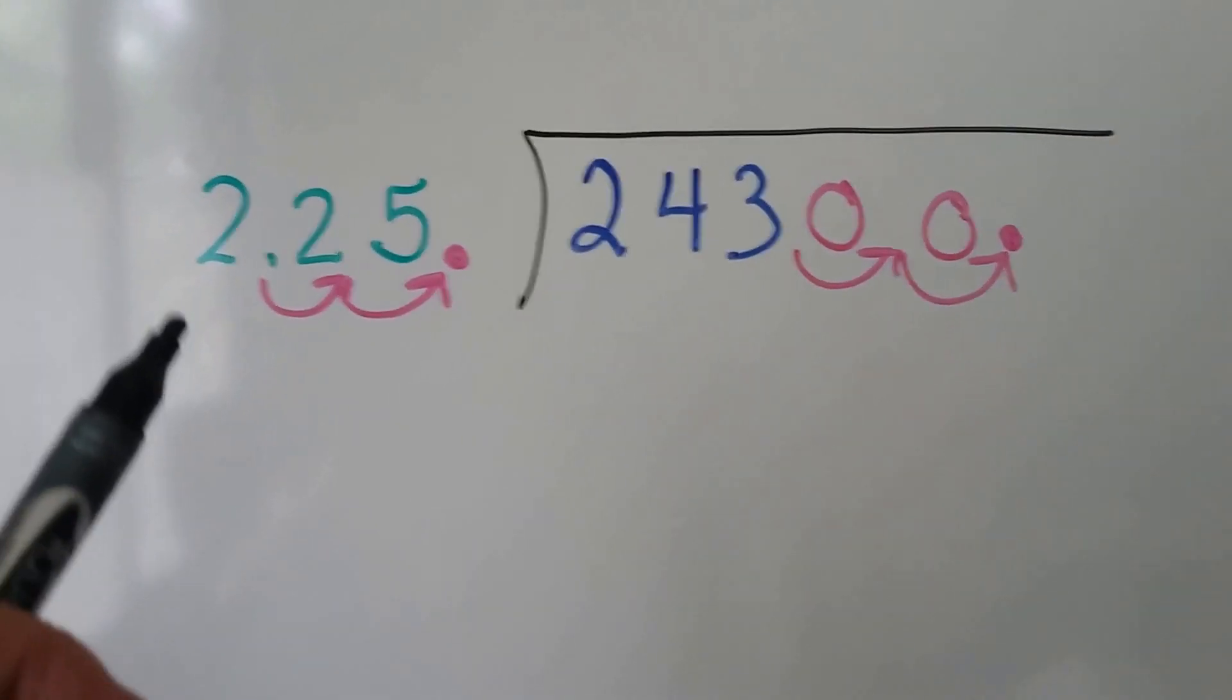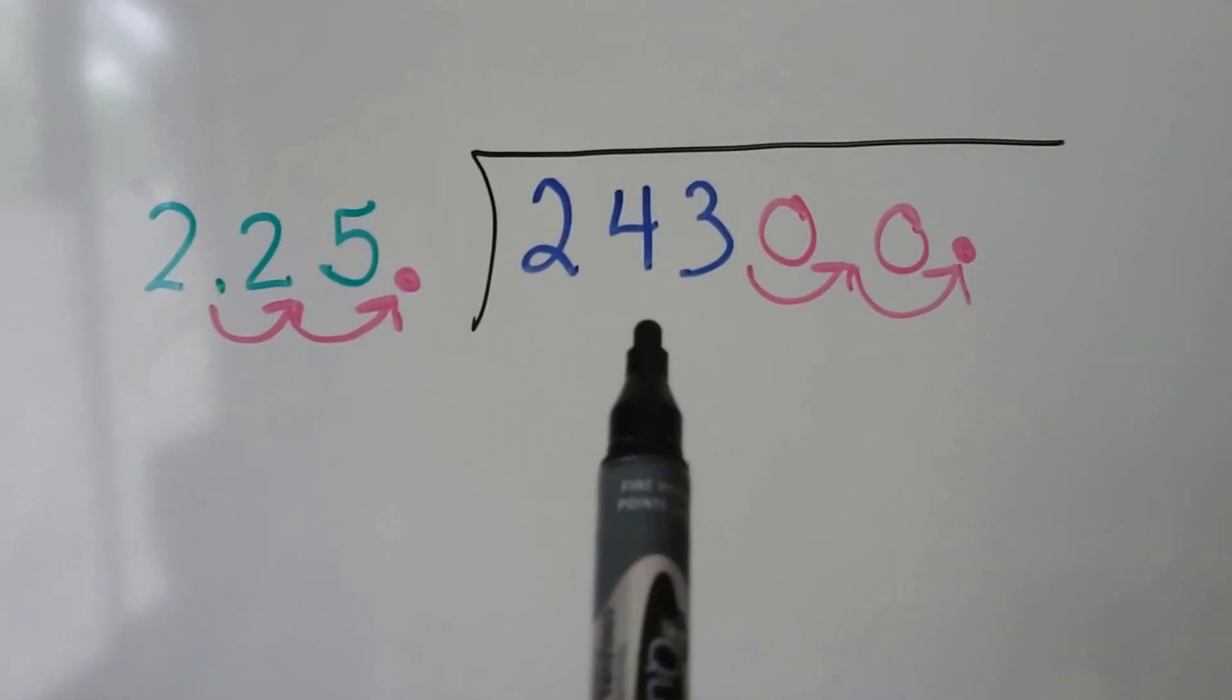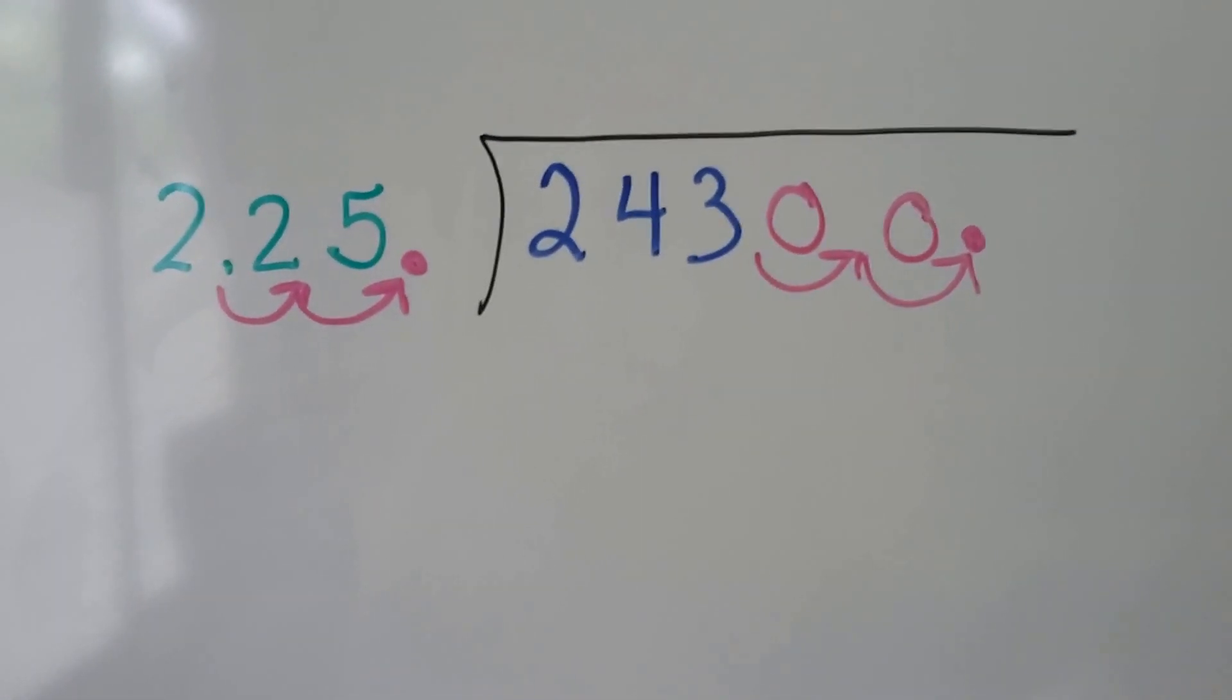And because we move it over two spaces here, we have to move it over two spaces here. So you have 24,300. So you were on the right track.